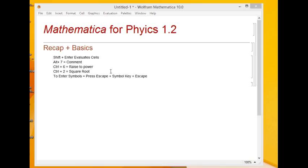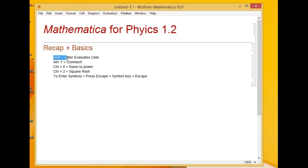To begin with, let's first recap what we learnt last time. Remember, shift plus enter evaluates cells. To comment, press alt plus 7 and then start typing. Ctrl plus 6 raises something to some power and Ctrl plus 2 gives you the square root symbol. To enter a new symbol, press escape, then the symbol key, and then press escape again.